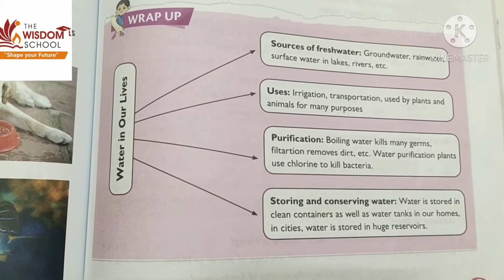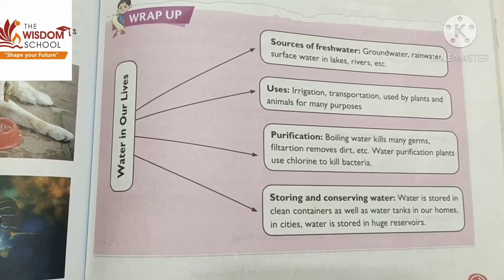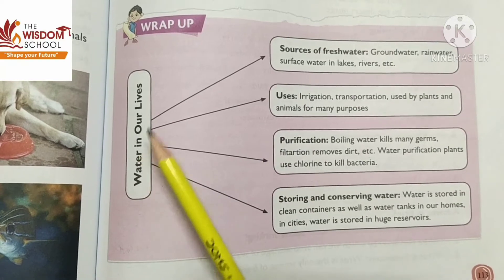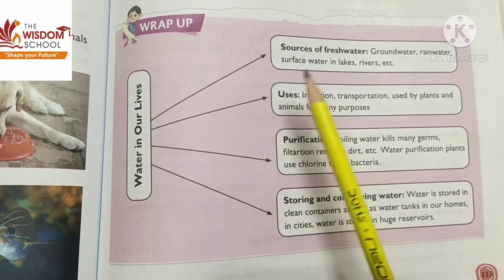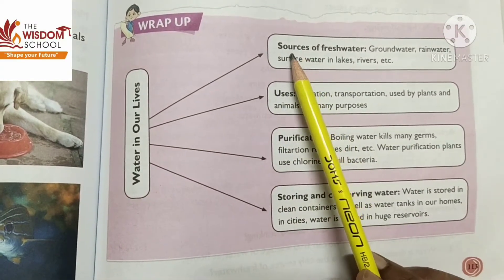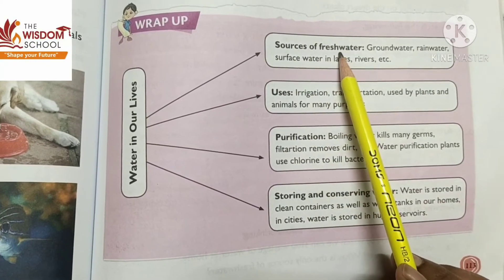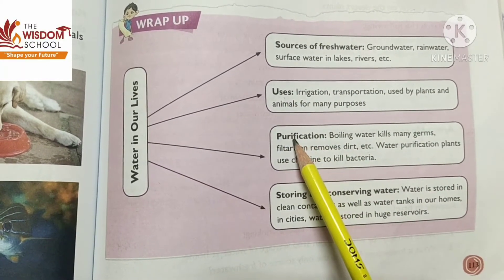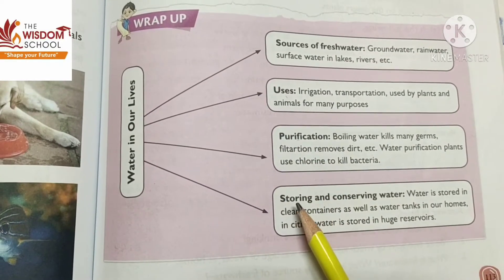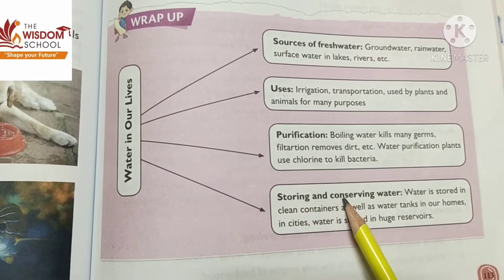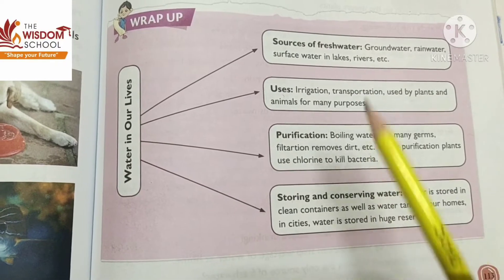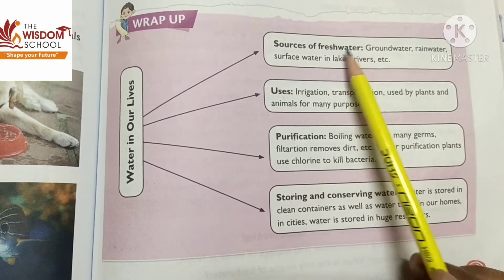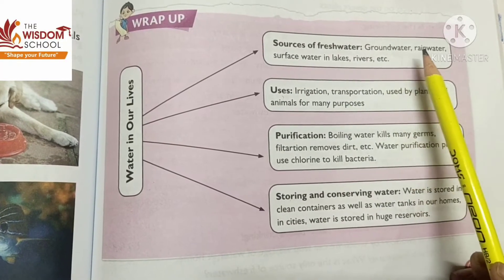Good morning students, welcome to your EVS class. Today we are going to revise Chapter Number 17: Water in Our Lives. In this chapter we have read about sources of freshwater, uses of water, purification of water, as well as storing and conserving water. What are the sources of fresh water? Fresh water ki sources kya hai — ground water, rain water,